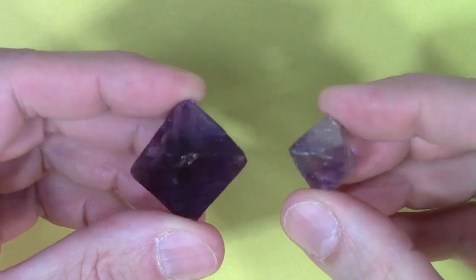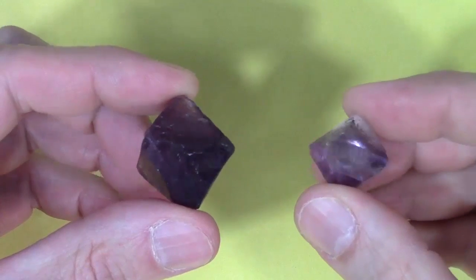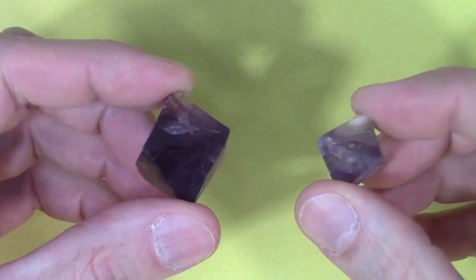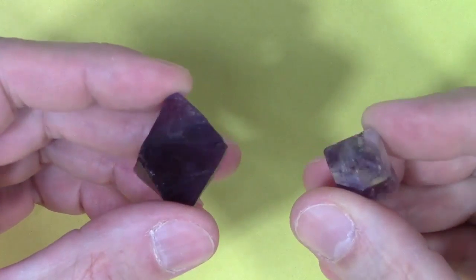You can buy these fluorite octahedra at many rock shops. Unlike the diamond, this is not the shape in which the crystal naturally grows. These are shaped by cleavage. Someone took a larger lump of fluorite and cracked it. It's weakest along the directions that make an octahedron.